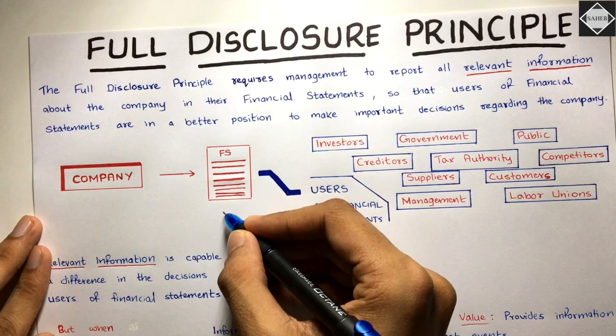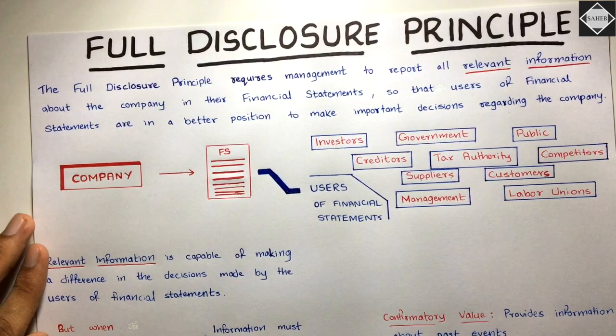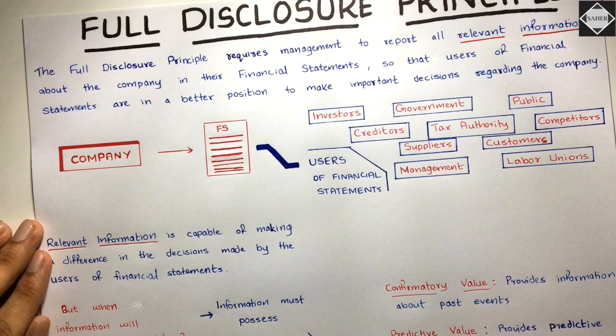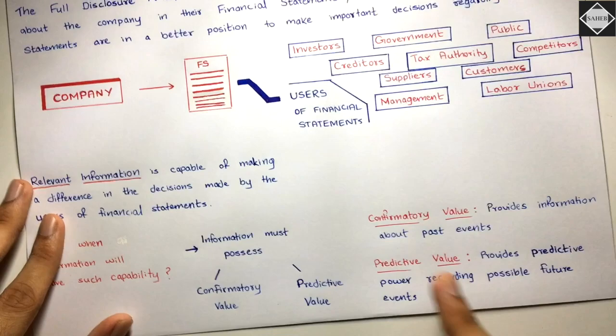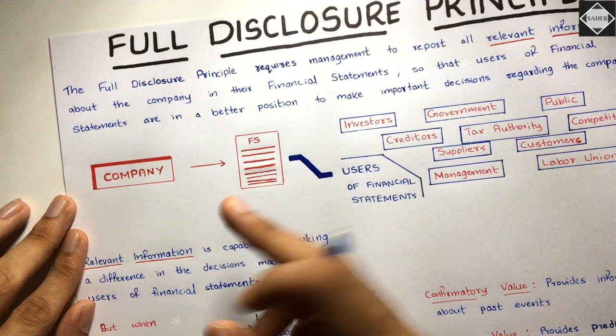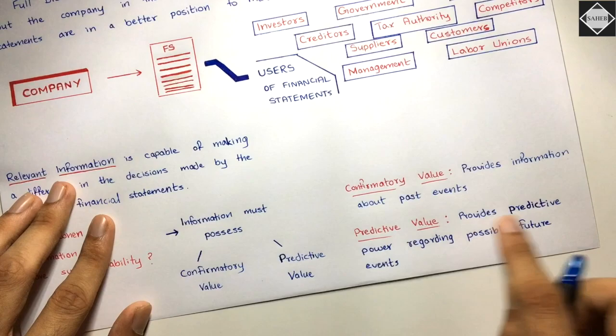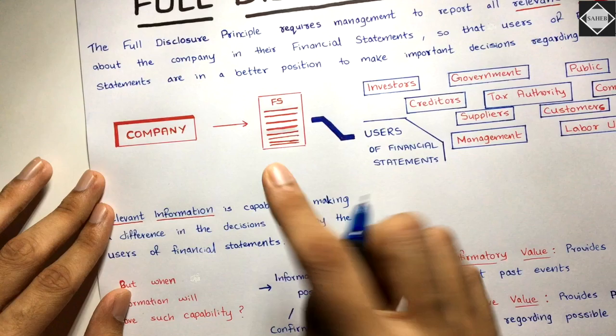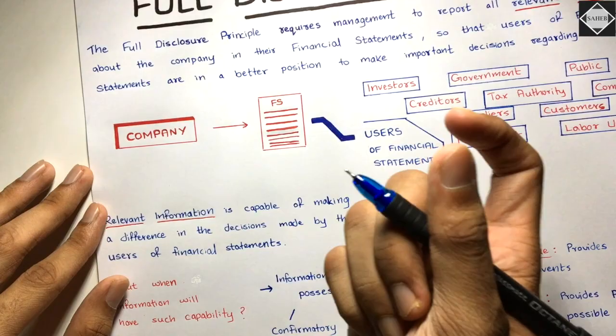When an investor reads the financial statement and sees the contingent liability of 1 million in the notes, they get the idea that in future, if the company loses the case, there will be a cash outflow of 1 million. This provides predictive power regarding possible future events — it is relevant information because it has predictive value. A cash outflow of 1 million is a considerable amount. This is how the full disclosure principle is applied.